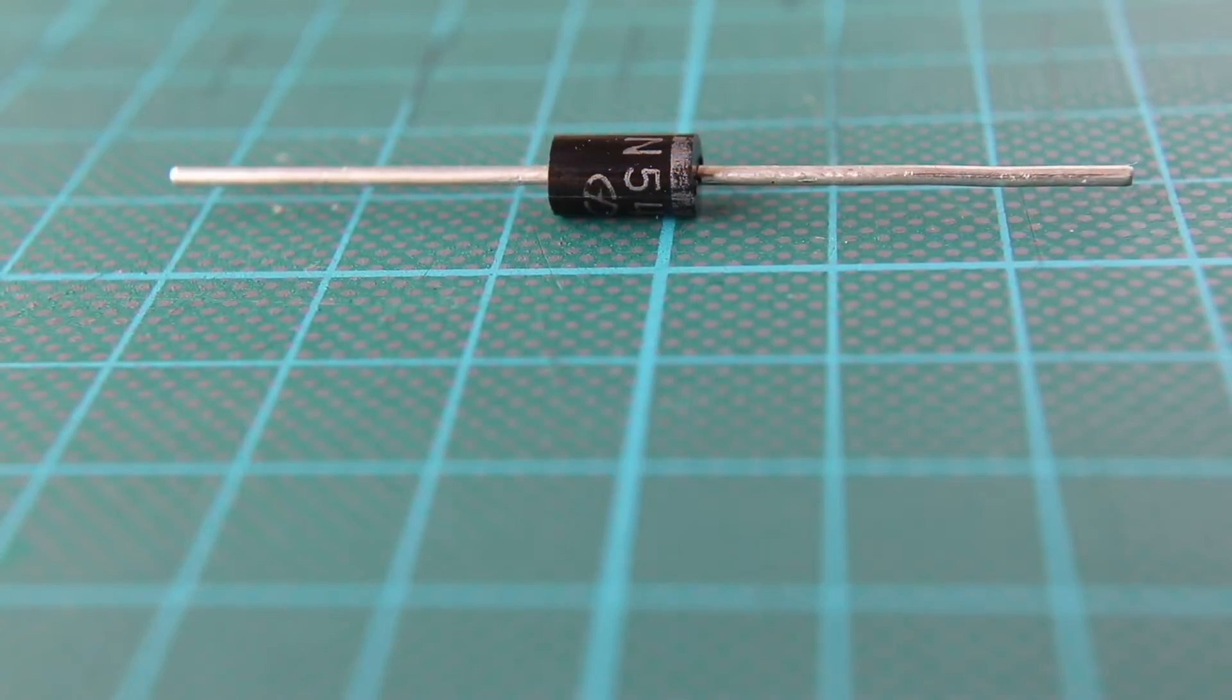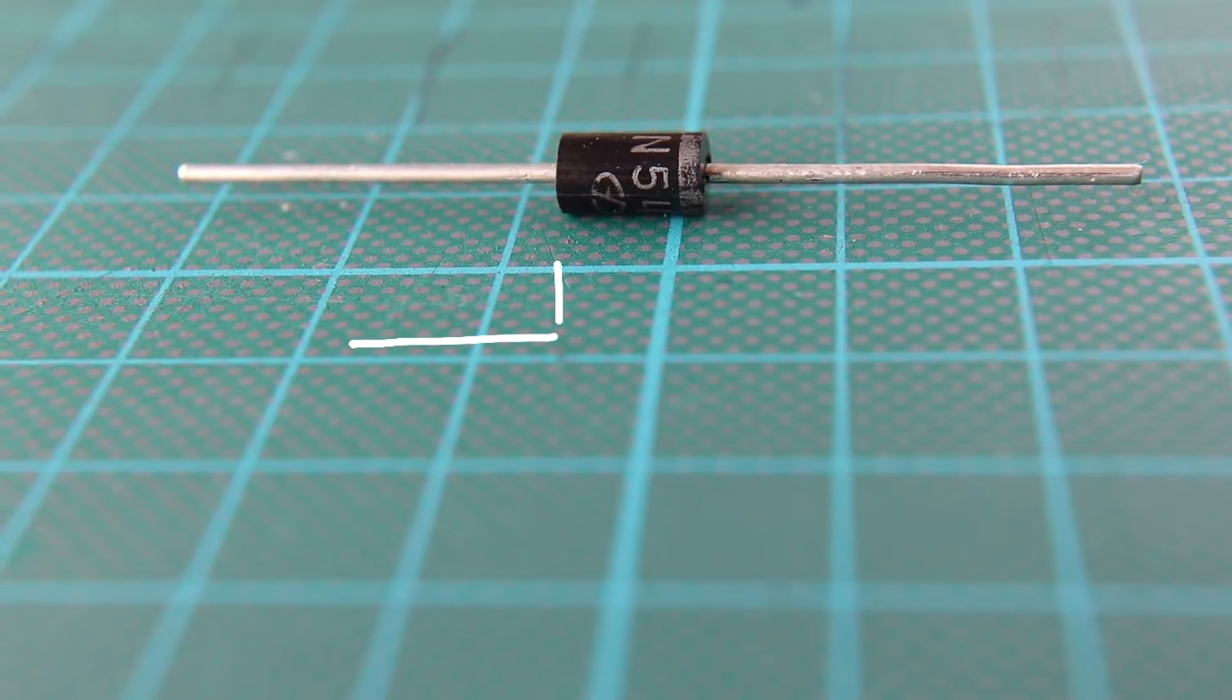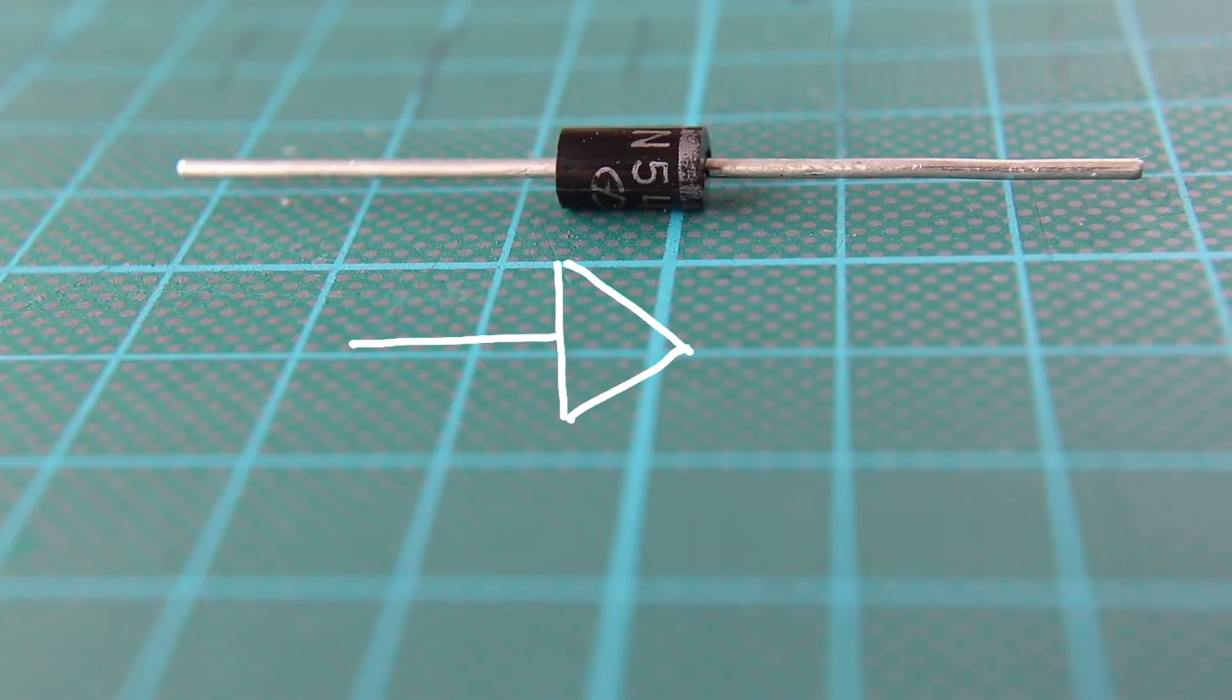The circuit symbol of a diode is an arrow and a vertical line, as shown in the diagram. The arrow indicates the direction in which the current can flow.